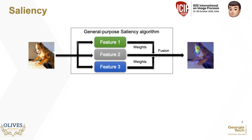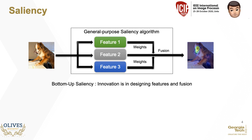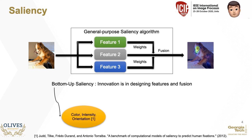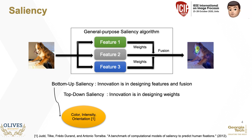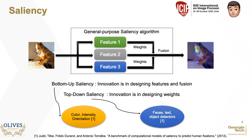There are two broad approaches of innovating this pipeline. The first is designing better features and fusing them, called bottom-up saliency — saliency that comes from the data itself and not the psyche of the individual. Color, intensity, orientation, and motion have been shown to effectively capture saliency. The other is the top-down approach, where feature weights are set based on the task the subject is asked to do. Examples include the presence of text, faces, or objects, which hold human attention.